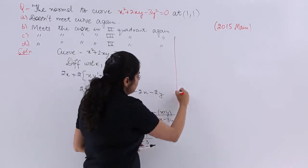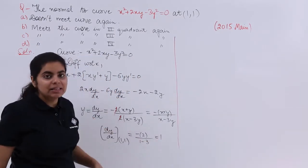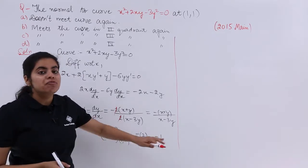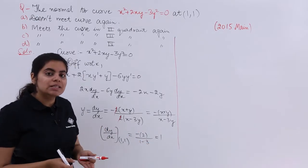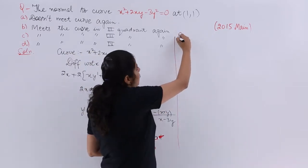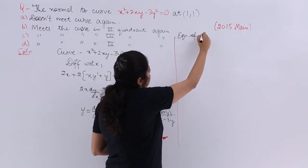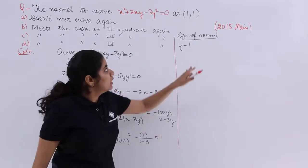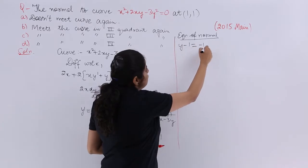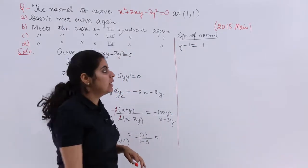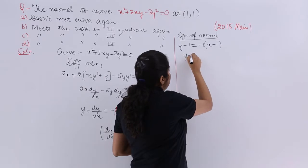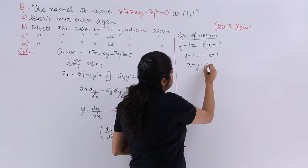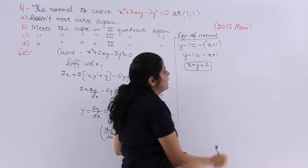Since dy/dx is the slope of the tangent, the slope of the normal is −1. Using point-slope form: y − 1 = −1·(x − 1), which gives y − 1 = −x + 1, or x + y − 2 = 0, i.e., x + y = 2. This is the equation of the normal.